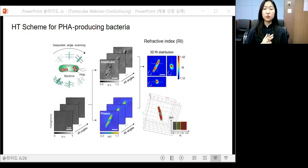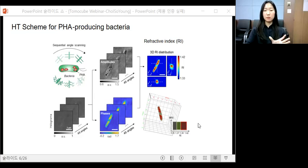Therefore, we introduce optical diffraction tomography, aka ODT, for the in-depth analysis of PHA producing bacteria. This is the schematic representation of this research. Using Tomocube ODT microscopic system and software, the refractive index distribution for the microbial cell sample can be obtained in three dimensions.